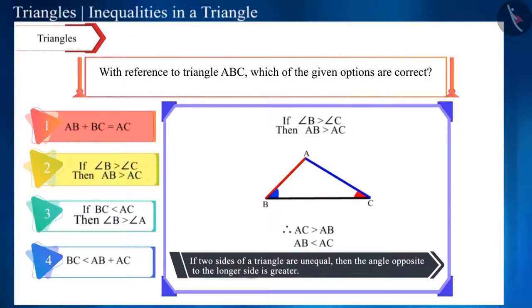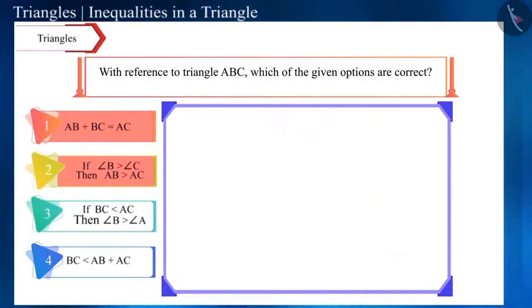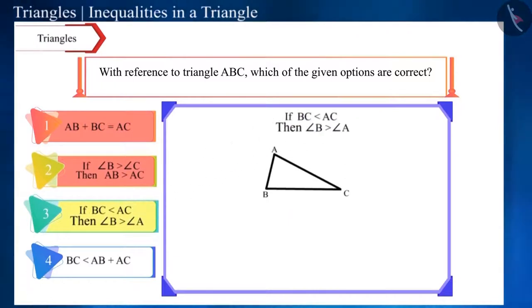This means that this option is also incorrect. Now, let's move to the next option. Here, side BC is smaller than side AC. That is, the angle opposite to side BC will be smaller than the angle opposite to side AC.